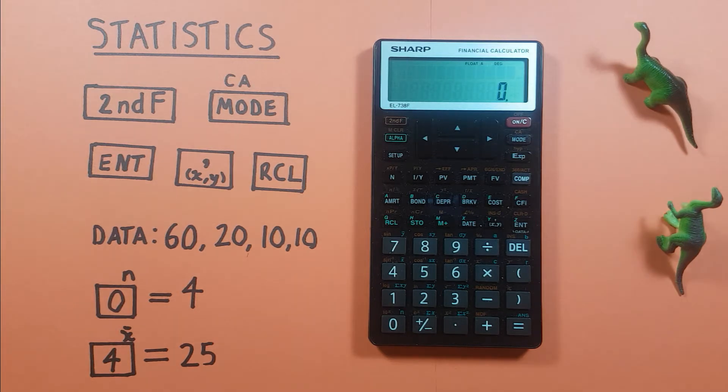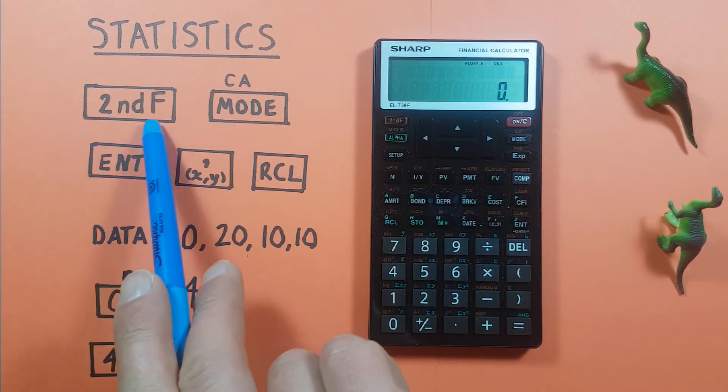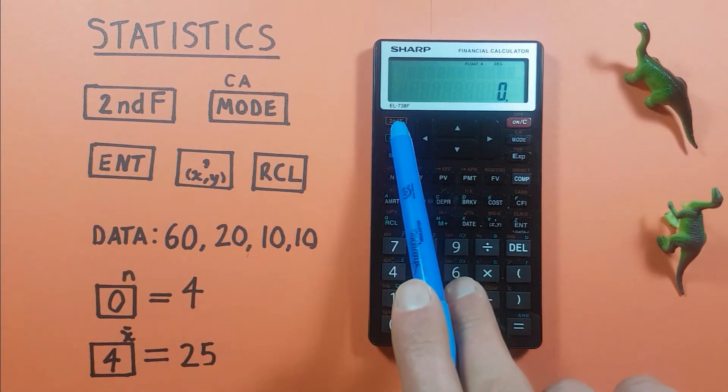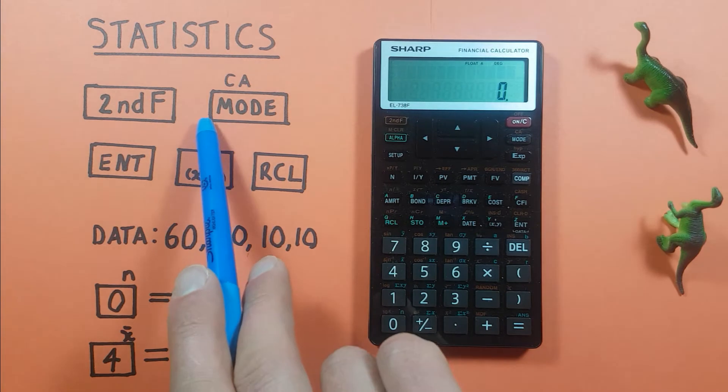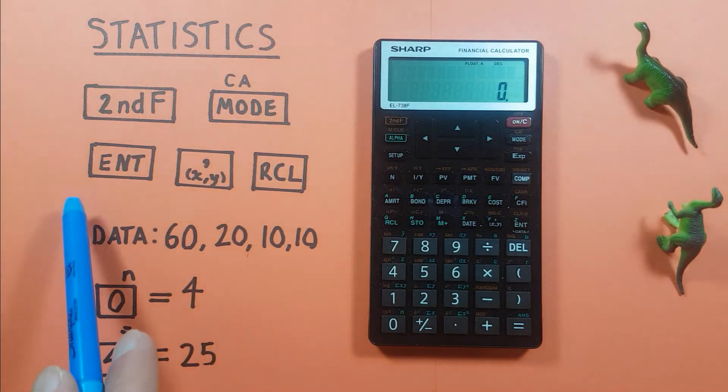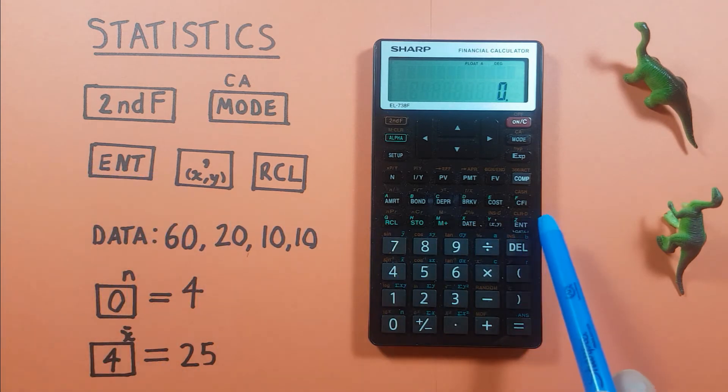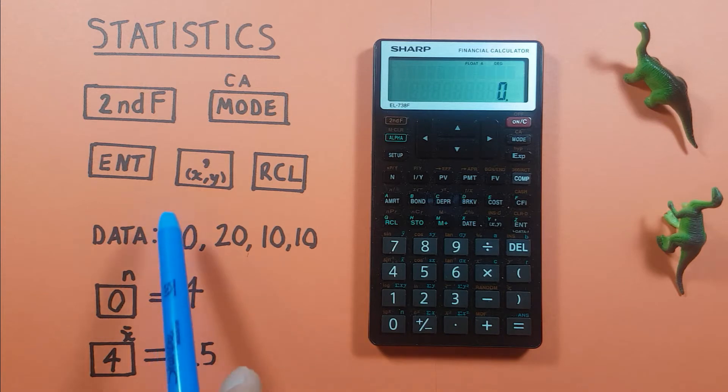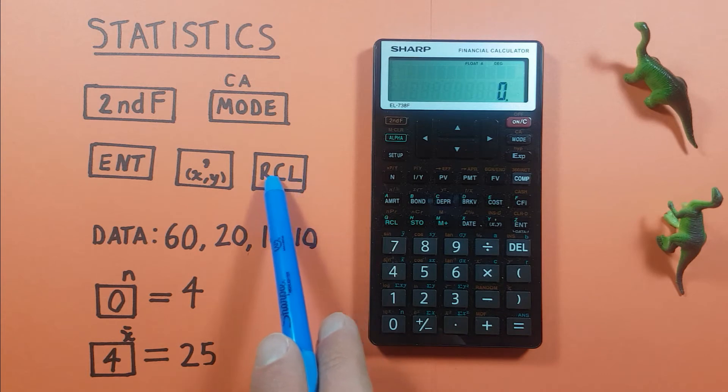To do this we'll be using the second function key, looks like this, located here. The mode key, that looks like this, located here. The enter key, that looks like this, located here. The comma key with the xy on it, looks like this, located here. And the RCL or recall key, looks like this, located here.